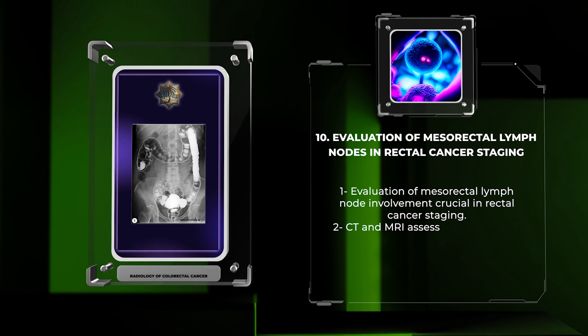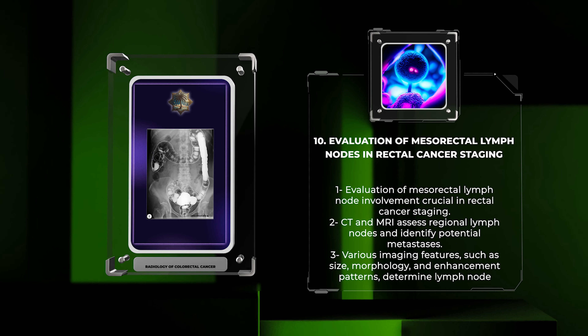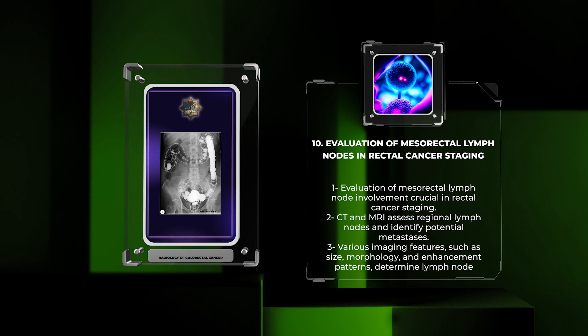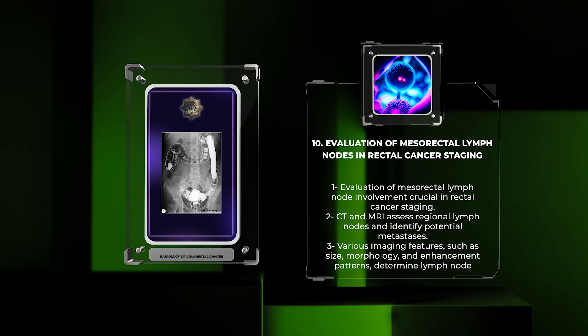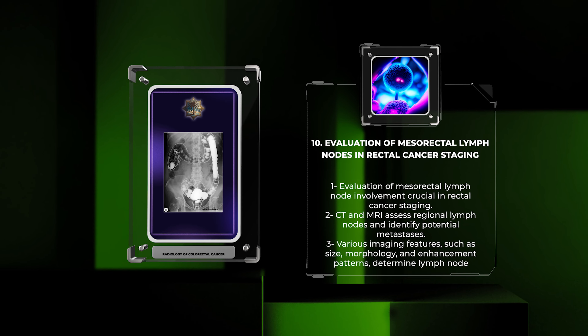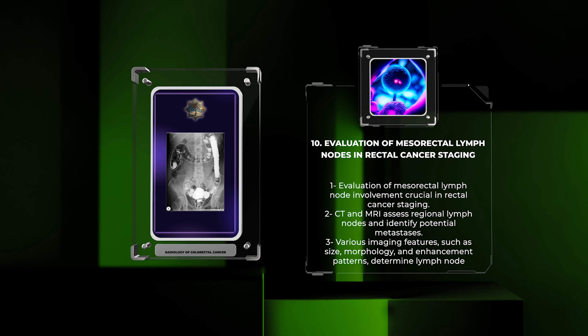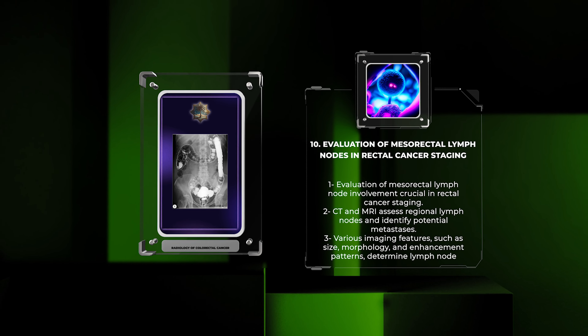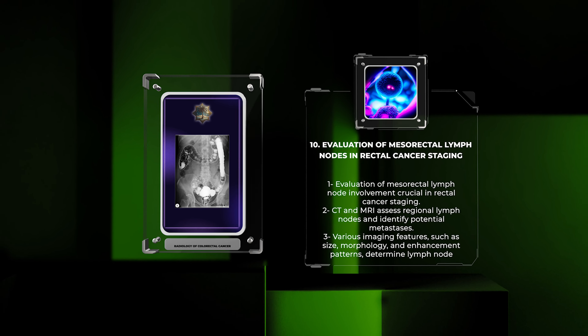The evaluation of mesorectal lymph node involvement is crucial in rectal cancer staging, as it guides treatment decisions and determines patient prognosis. Imaging modalities like CT and MRI are employed to assess regional lymph nodes and identify potential metastases. By considering various imaging features such as size, morphology, and enhancement patterns, radiologists can help establish the presence or absence of lymph node involvement, contributing to accurate staging and optimal patient management.